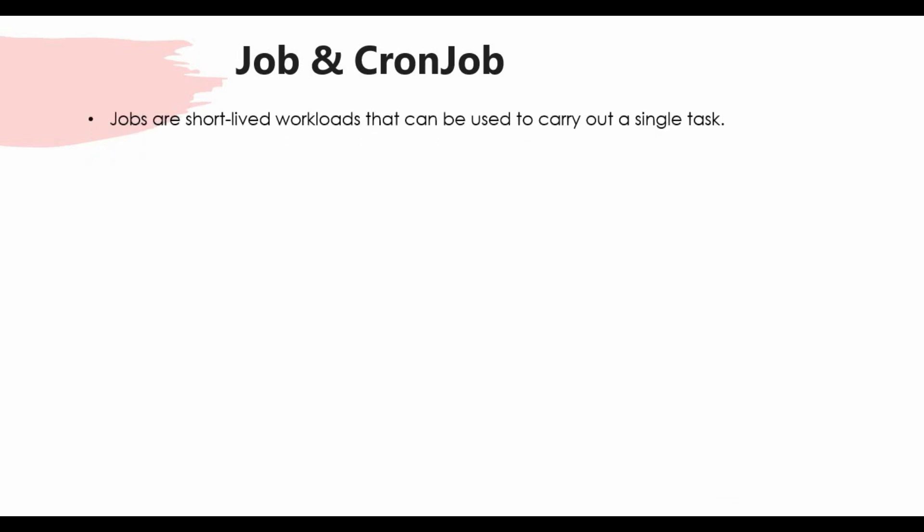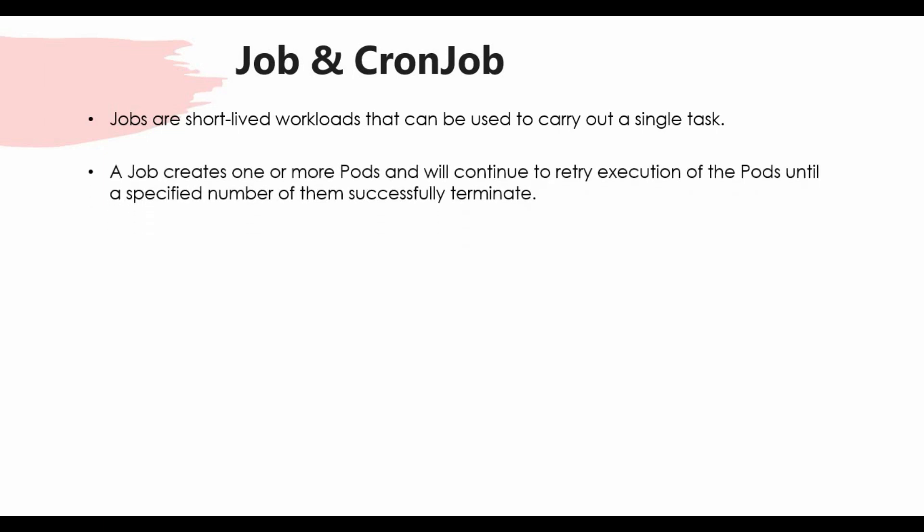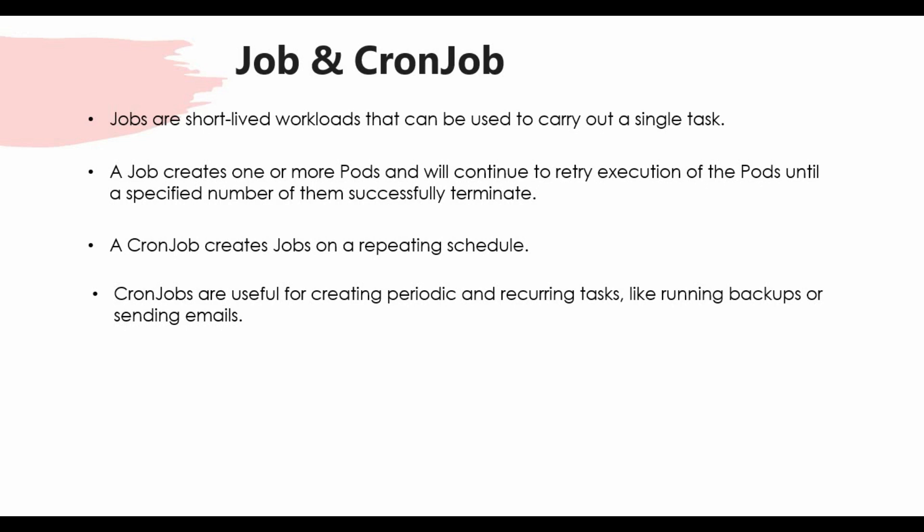Jobs are short-lived workloads used to carry out a single task. The Job controller keeps retrying execution until the specified number of pods successfully complete, then terminates. It's a one-time task that runs until it succeeds. CronJob, on the other hand, runs on a repeated schedule — for example, every day at 5am. CronJob is useful for periodic and recurring tasks like running backups or sending emails.